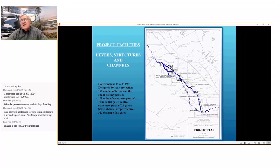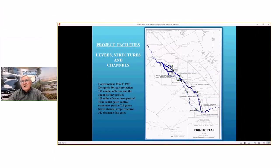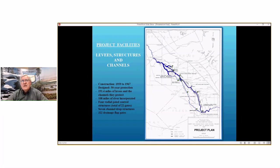Because we're not in the thalweg of the valley — the lowest part of the valley is further to the west — anything to the east of the structure of the system has to have flat gates that allows local drainage to get into the system. There are 322 flat gates in the system, and we have to maintain those each and every time we receive floodwater.